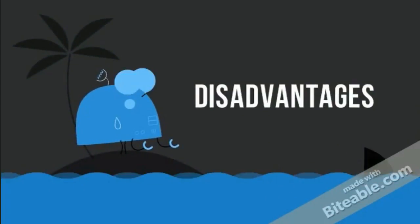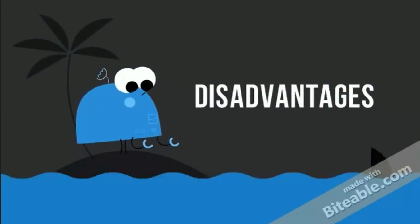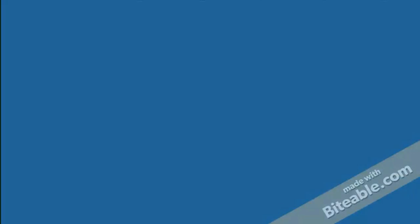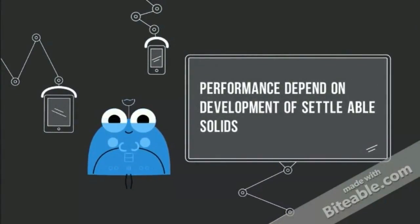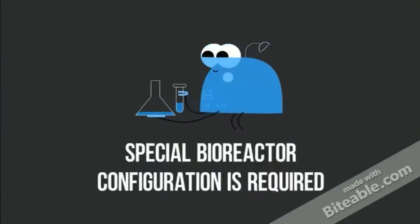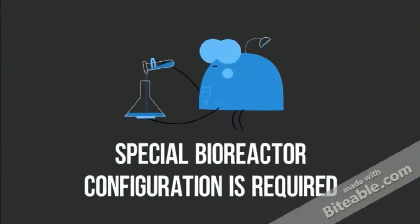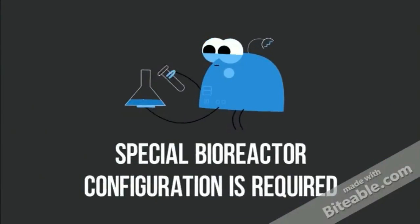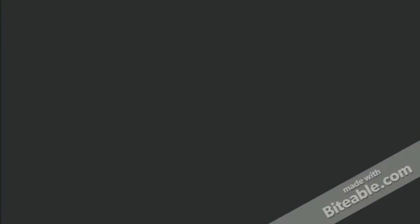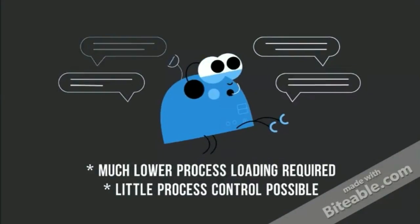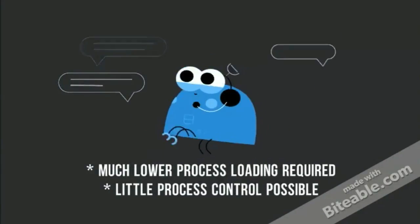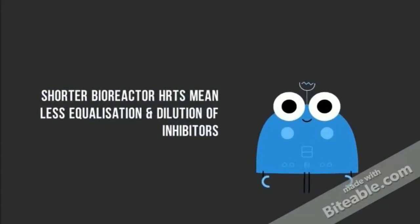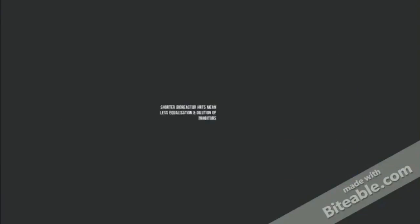Upflow anaerobic sludge blanket disadvantages: firstly, performance depends on development of settable solids; a special bioreactor configuration is required; much lower process loading required and little process control possible; and lastly, shorter bioreactor HRTs mean less equalization and dilution of inhibitors.